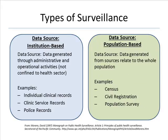Slide 18: These are the types of surveillance by data source. Data generated through administrative and operational activities is the source for institution-based surveillance. This data is not confined to the health sector. Examples include individual clinical records, clinic service records, and police records.